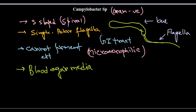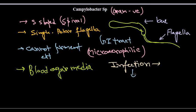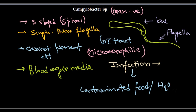As GI tract microorganisms, they are related to different kinds of GI tract infections. These infections may lead to diarrhea, nausea, vomiting, abdominal cramps, and fever. This kind of GI tract infection is caused due to contaminated food or water.